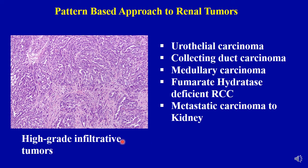High grade infiltrative tumors include urothelial carcinoma, collecting duct carcinoma (a somewhat vanishing entity), medullary carcinoma, and fumarate hydratase-deficient renal cell carcinoma. Of course, you also need to keep metastatic carcinoma to the kidney in your differential diagnosis when dealing with this kind of high grade infiltrative tumor.